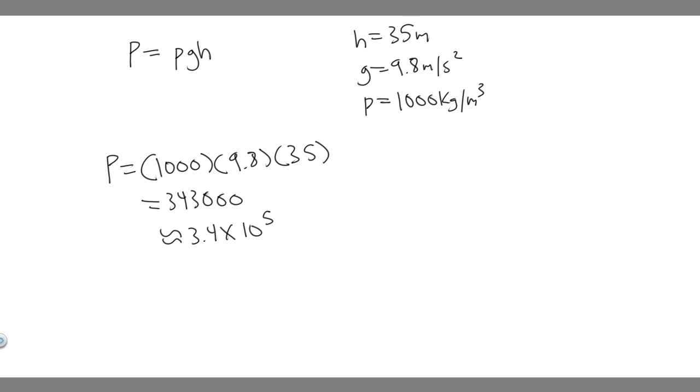The units that we use for this when we're using meters is just going to be Newtons over meters squared. So 3.4 times 10 to the 5th Newtons per meter squared. This is going to be the pressure needed to raise this column to the same height, or 35 meters.